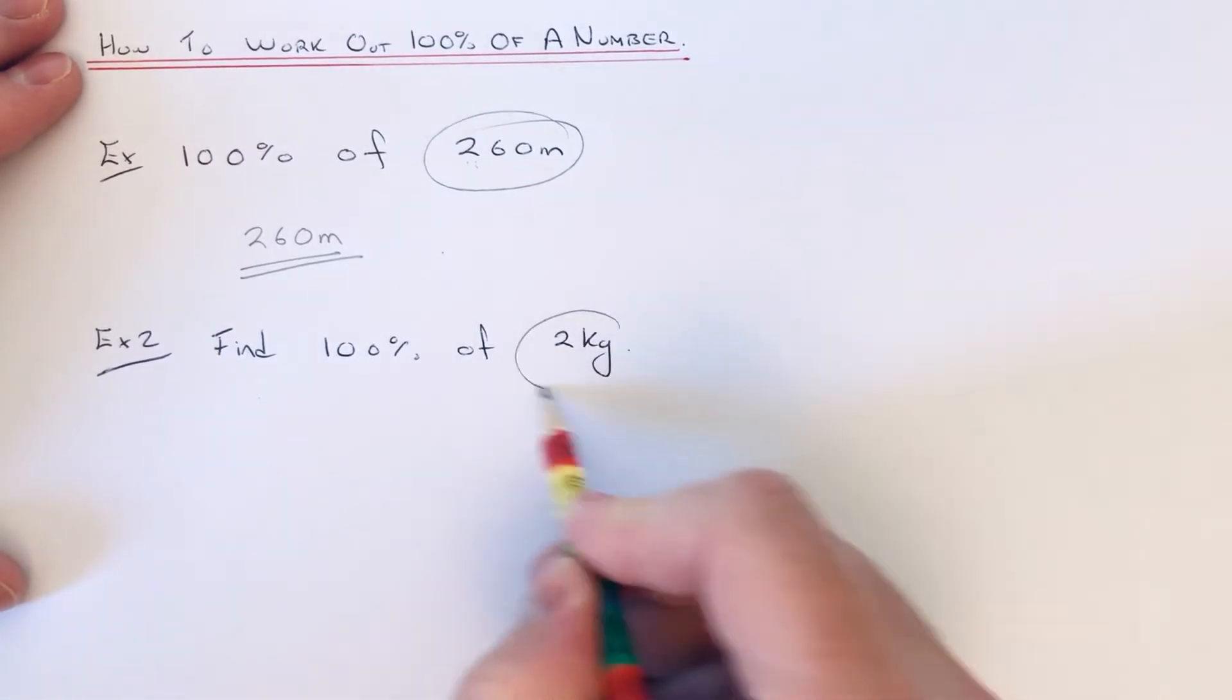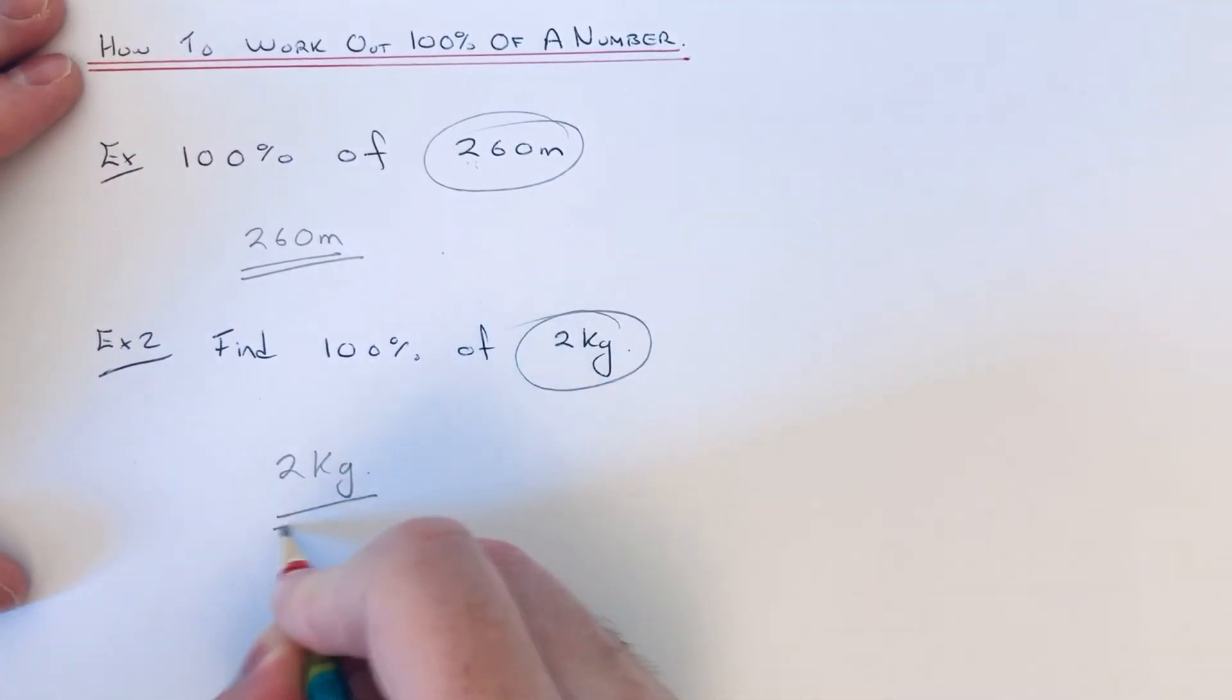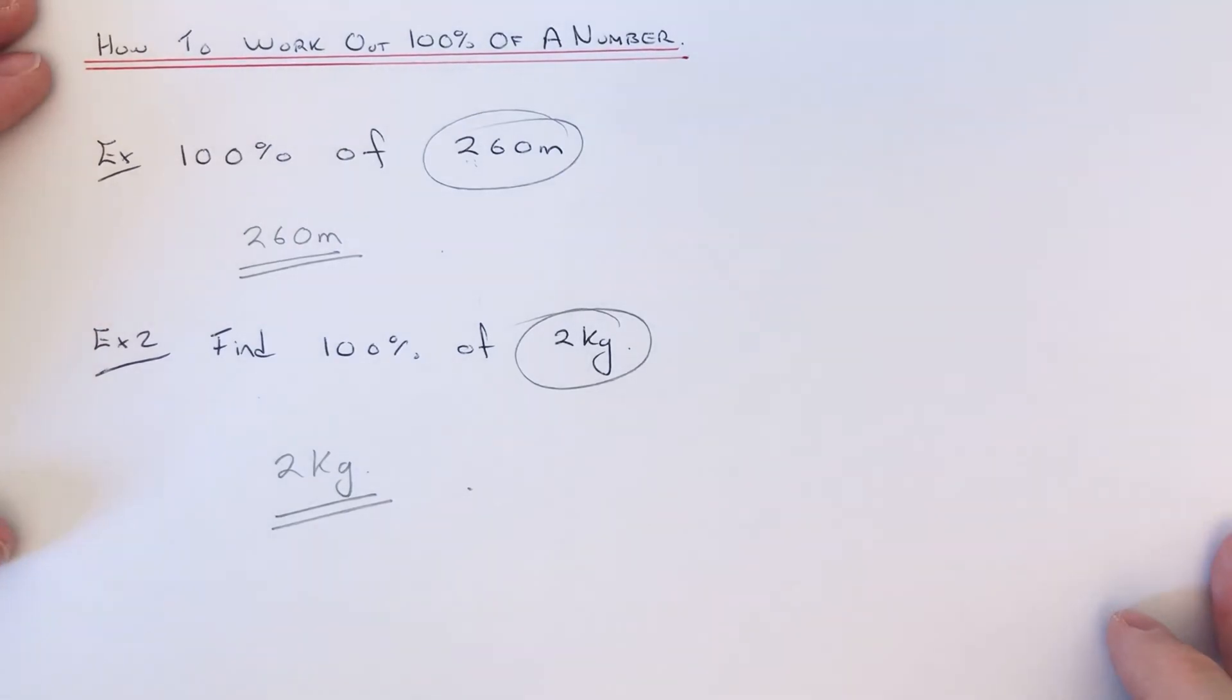This will be our answer, so 100% is 2 kilograms. Nice and easy if you're asked to work out 100%.